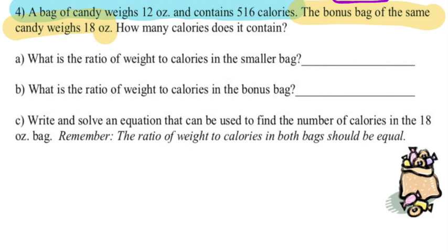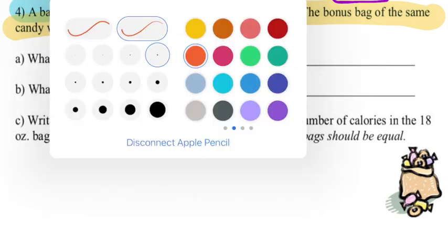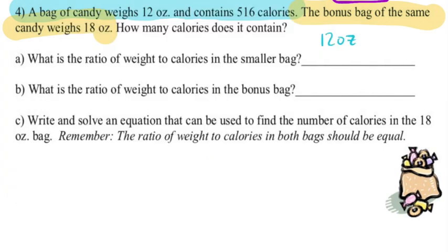So we're going to set up some ratios here. The first part says, what is the ratio of weight to calories in the smaller bag? So the smaller bag would have been the 12 ounce bag. So they're asking weight to calories. Well, our weight is 12 ounces. To calories means over calories. So we have the number of calories, which is 516.